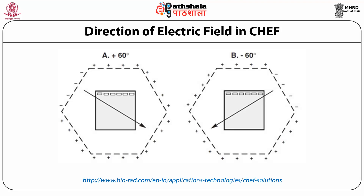In the CHEF PFGE system, electrodes are placed and can apply the electric field at an angle of +60° and -60°—counterclockwise and clockwise respectively—as well as a linear zero-degree electric field. In this CHEF method, the range is not limited to 60 degrees; this is shown only for representation. The degree and angle of the electric field can be changed to 30°, 60°, 90°, or 120° depending upon the application and the sample being resolved.